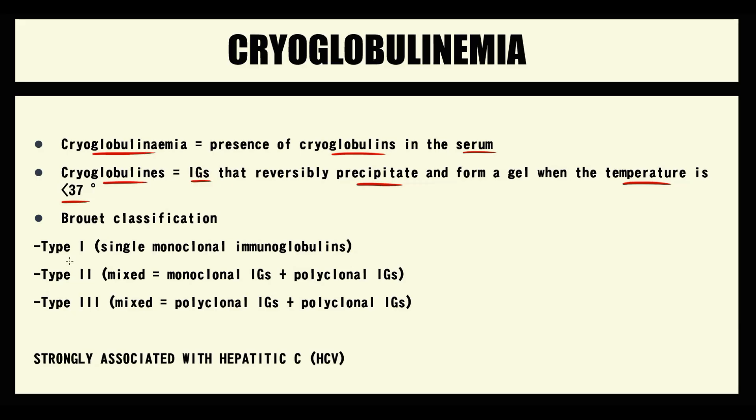According to Brouet classification, we have three types of cryoglobulinemia. The first type is characterized by the presence of single monoclonal immunoglobulins.